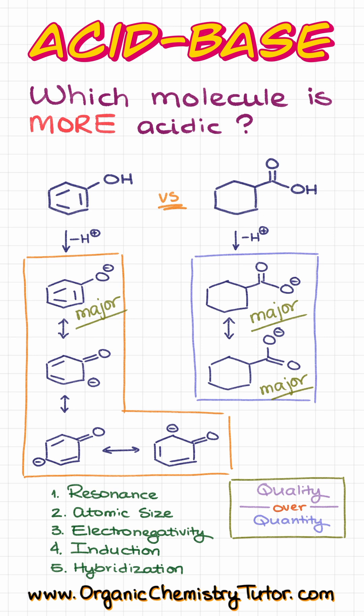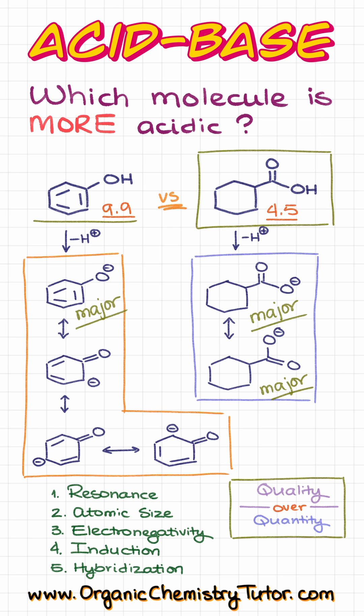As the major contributors are way more important than the minor contributors, the one on the right is actually going to be more stable, which means that our carboxylic acid on the right is going to be more acidic than the phenol on the left. And of course, if we wanted to double check with the pKa values: the pKa for the carboxylic acid is about 4.5, while the pKa for phenols is about 10, which means that carboxylic acids are 100,000 times more acidic than phenols, even though phenols have seemingly more resonance.